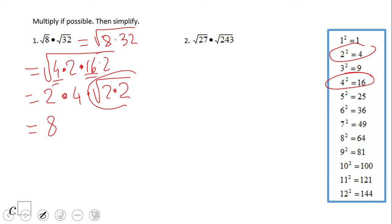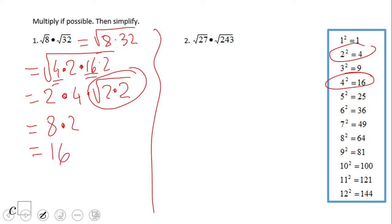We have 2 times 4, which is 8, and then square root of 2 times square root of 2 is 2. So the final answer is 16. There's really no need for a calculator with this method. Pause this video clip and try number two.